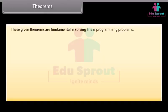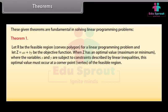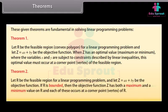Theorems — fundamental in solving linear programming problems. Theorem 1: Let R be the feasible region (convex polygon) for a linear programming problem and let Z equals AX plus BY be the objective function. When Z has an optimal value (maximum or minimum), where the variables X and Y are subject to constraints described by linear inequalities, this optimal value must occur at a corner point (vertex) of the feasible region. Theorem 2: Let R be the feasible region and Z equals AX plus BY be the objective function. If R is bounded, then Z has both a maximum and a minimum value on R, and each of these occurs at a corner point (vertex) of R.